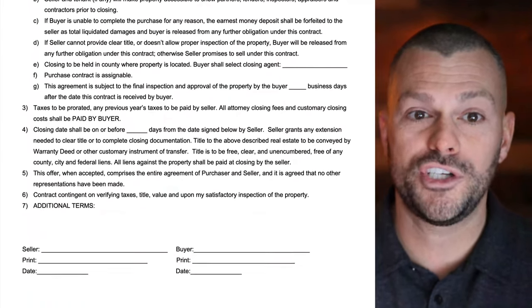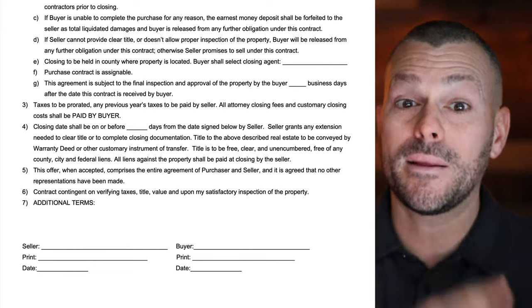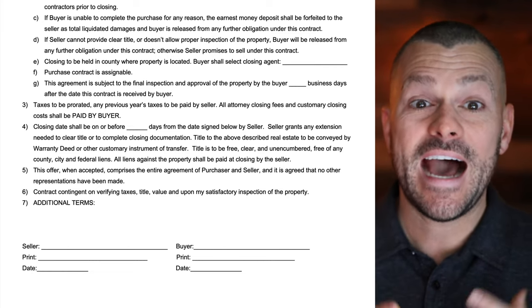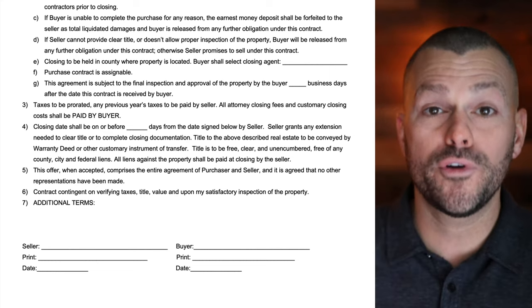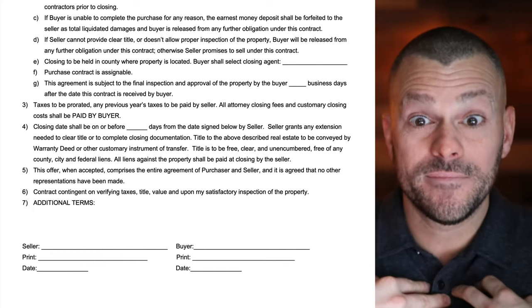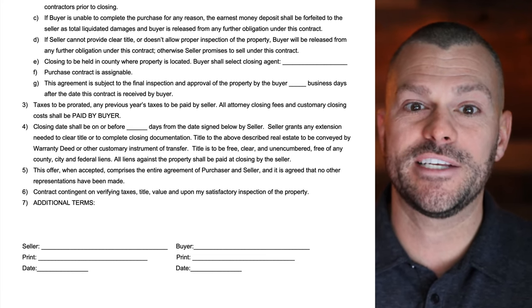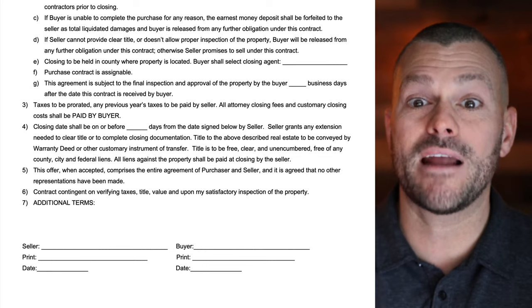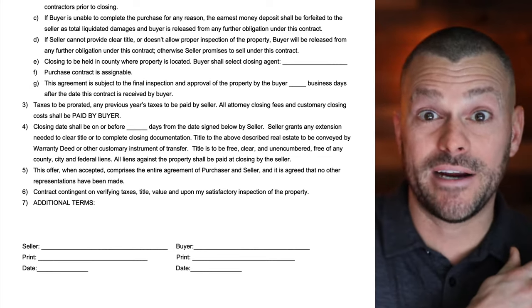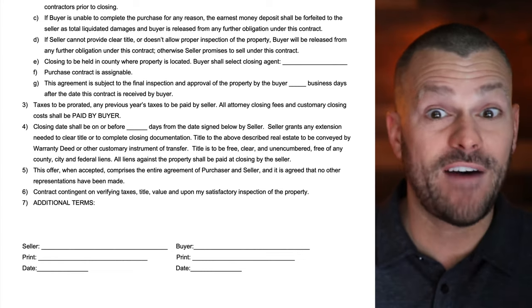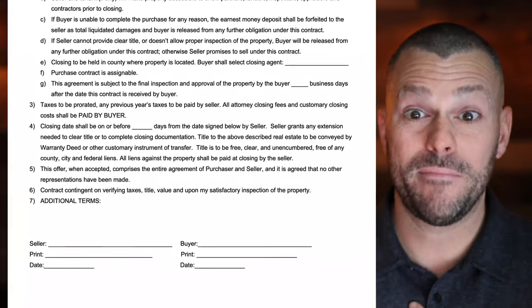Condition G: the agreement is subject to the final inspection and approval of the property by the buyer — blank business days after the date this contract is received. This is the amount of time I want to give myself, my team, and my cash buyers to inspect the property. You may write 5, 10, 15, or 20 days in there. Notice we have 'business days' — that's Monday through Friday. Five business days could be seven calendar days. Ten business days is actually 14 days. By adding the word 'business,' you buy yourself 40% more time to do your inspections — I love it.